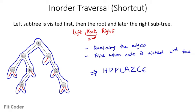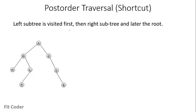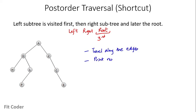Now let's check the post-order traversal. In post-order traversal, we first visit the left subtree, then the right subtree, and at the last we visit the root. So the root is visited third. The process is the same — we travel along the edges and print the node when it is visited for the third time.